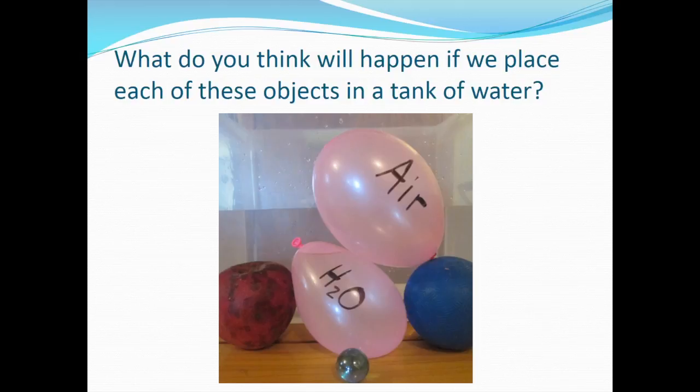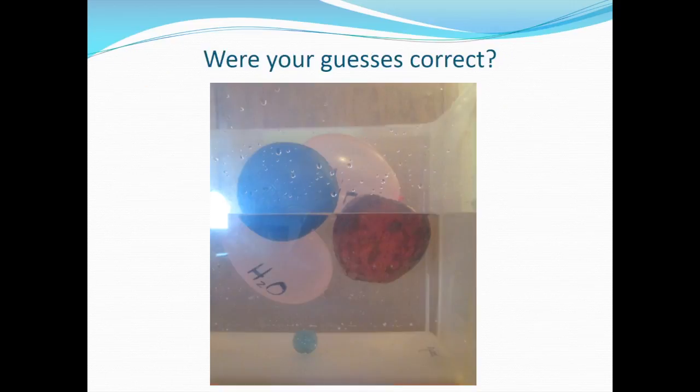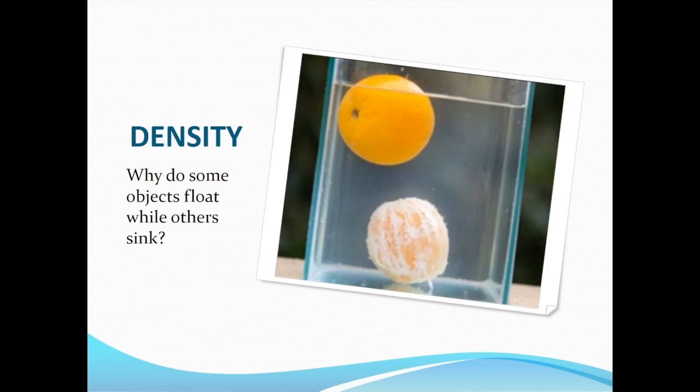Think about this question for a minute and discuss what you think will happen. Did you guess correctly? If not, which ones were different from your original guess? Why do some of the objects float while others sink? The answer is density. Let's find out what density is and why it's so important.